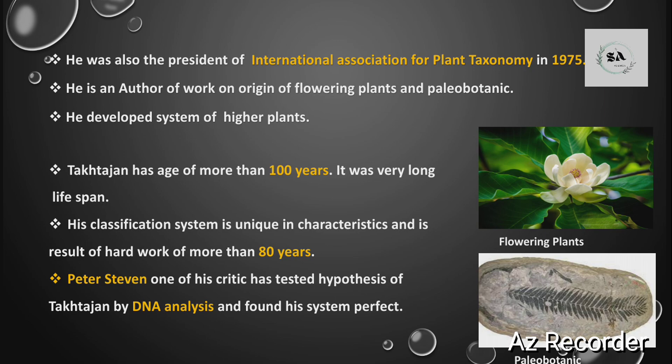He wrote many books and was the lead author of those books. He developed a system for higher plants. Regarding Takhtajan's age, he lived for more than 100 years — he had a very long lifespan. Takhtajan's classification system is unique in its characteristics. It is said that Takhtajan worked on his classification system for more than 80 years.